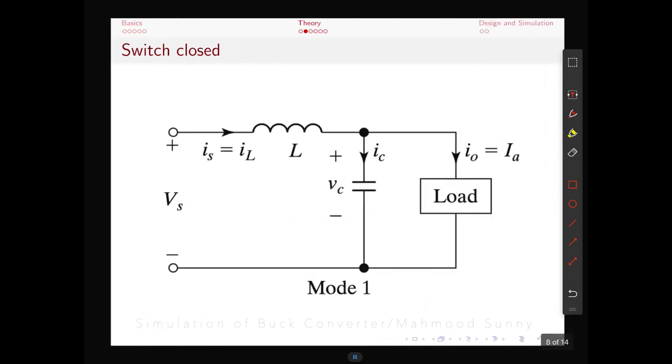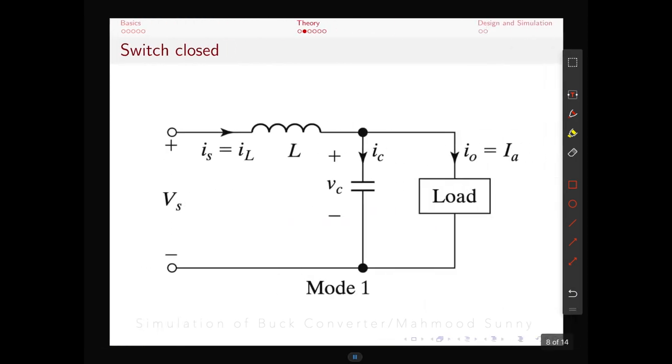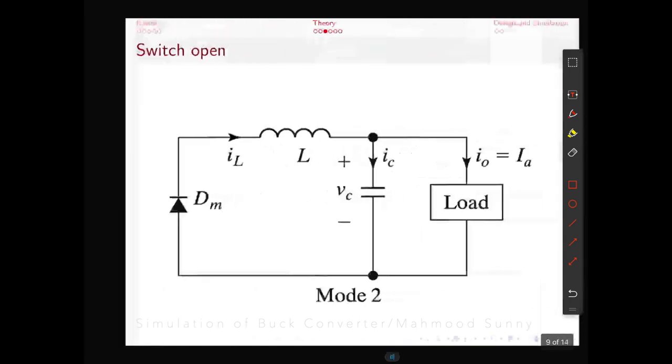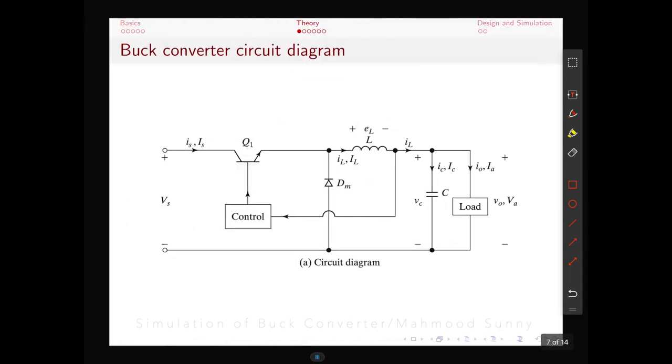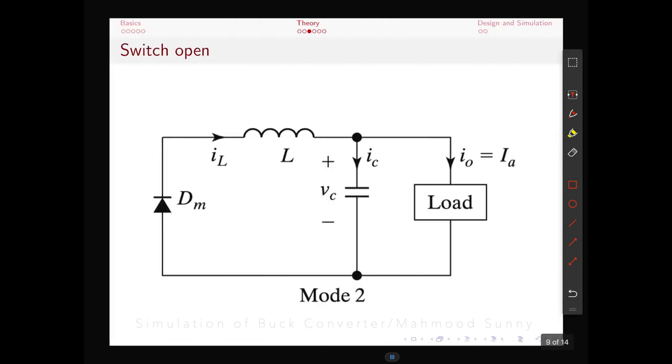Whenever the switch is closed the circuit becomes like this. And the supply voltage is connected through the inductor to the load. The supply current IS goes through the inductor and to the load. And when the switch is open then the entire supply side is disconnected from the load. And the remaining energy in the inductor flows like this and is dissipated because of the resistance in the circuit.